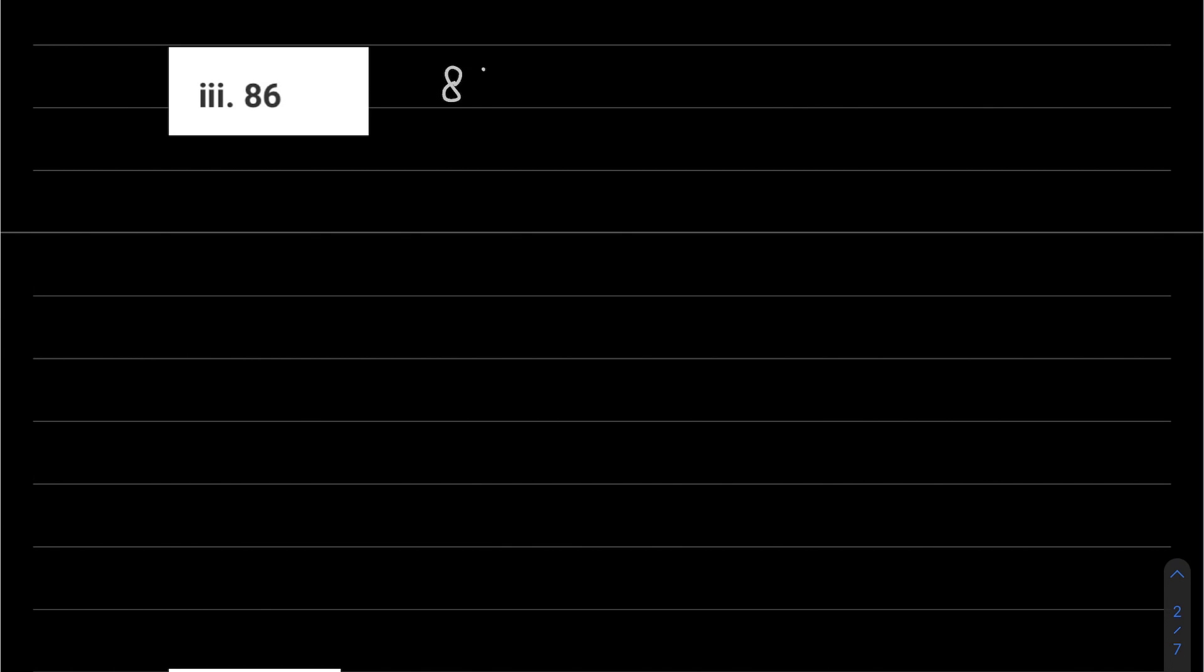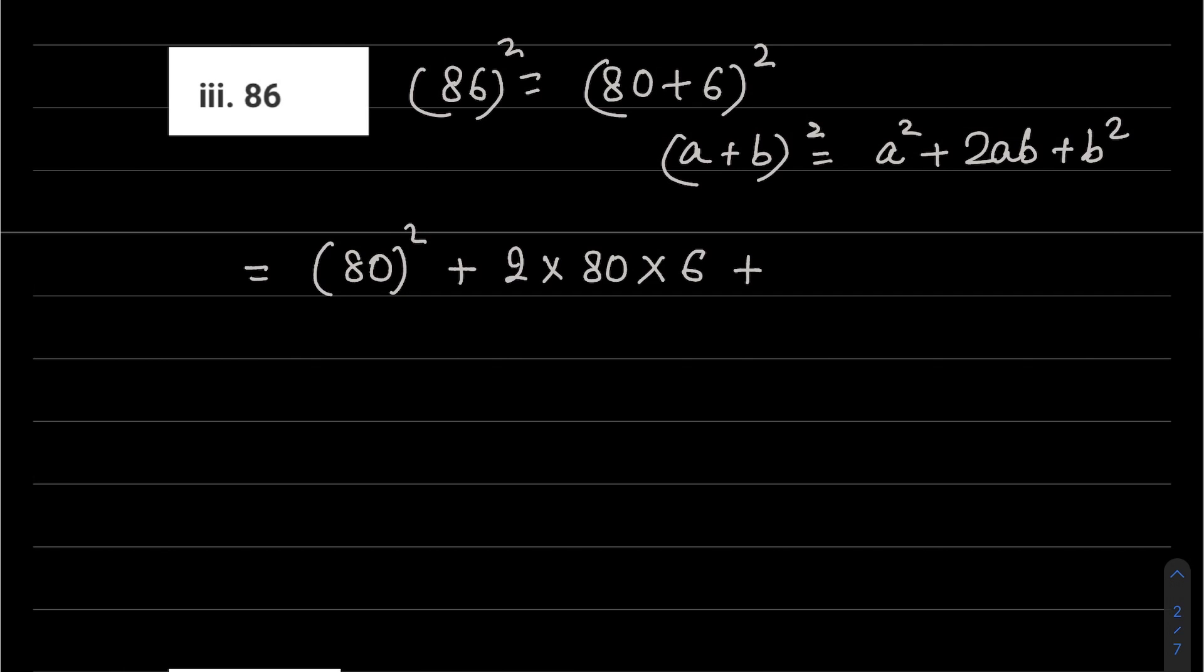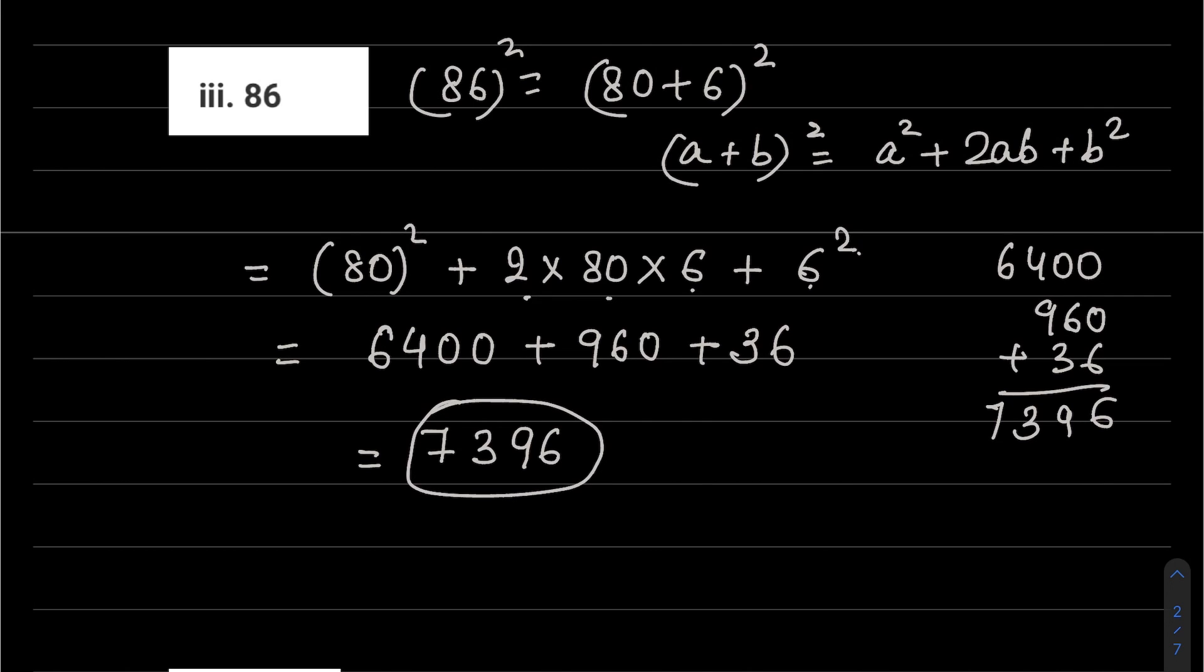Third part: 86. So 86 squared can be written as 80 plus 6 whole squared. Our identity is a plus b whole square equals a squared plus 2ab plus b squared. So 80 plus 6 whole squared equals a squared, that is 80 squared, plus 2 into 80 into 6, plus b squared, that is 6 squared. 80 squared means 80 into 80, which is 6400. 2 into 80 is 160, 160 into 6 is 960.